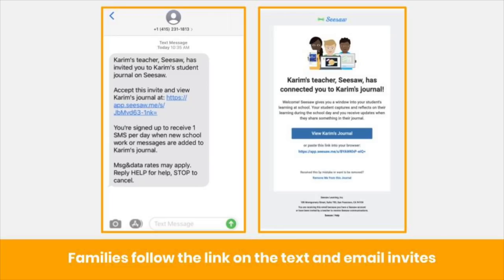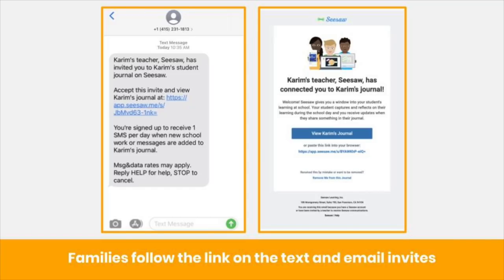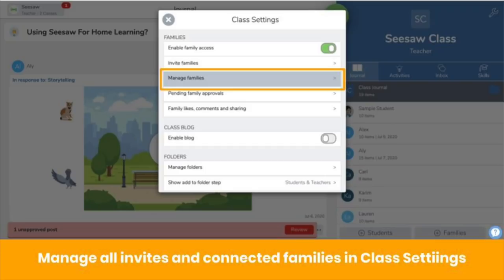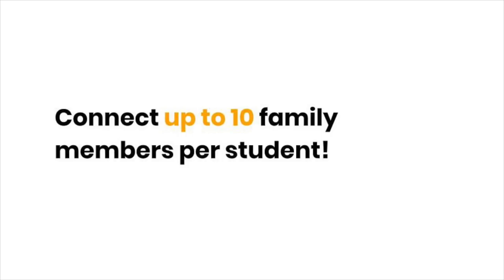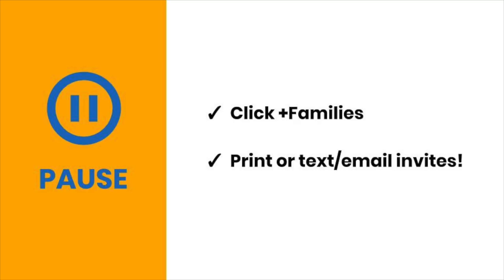Family members will either get a text message or email with a link to connect. Families click the link and follow the prompts. To check the status of your invites, click plus families to return to this page — you'll see the status of your invites on the right. You can manage all invites and connected family members in class settings by clicking Manage Families. Seesaw for Schools administrators can also invite families in bulk; if you're a Seesaw for Schools teacher, encourage your admin to look into this option. No matter how you invite families, each student can have up to 10 family members connected. Now pause the video, click plus families, and get your families connected.